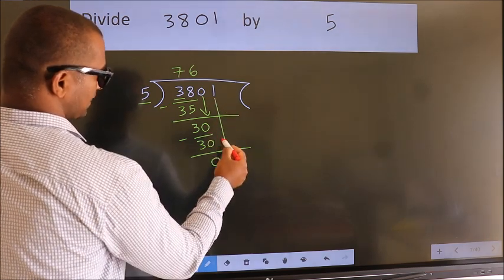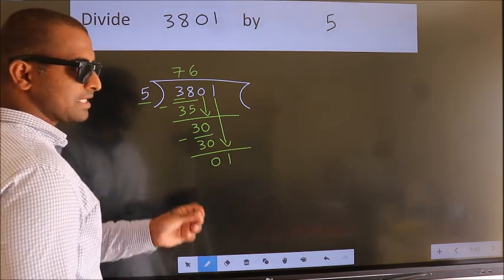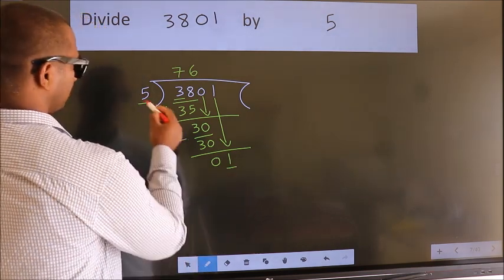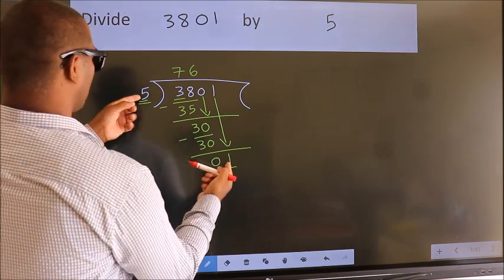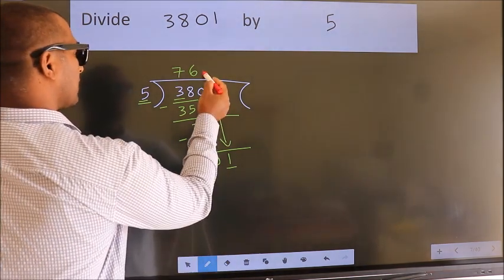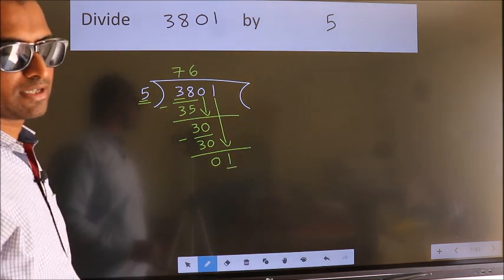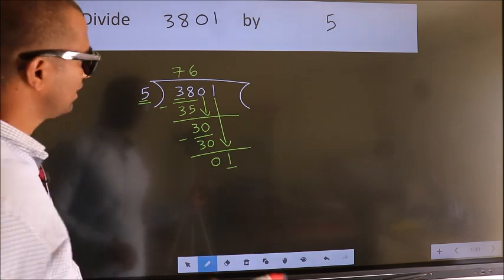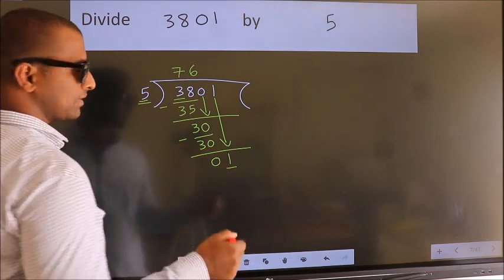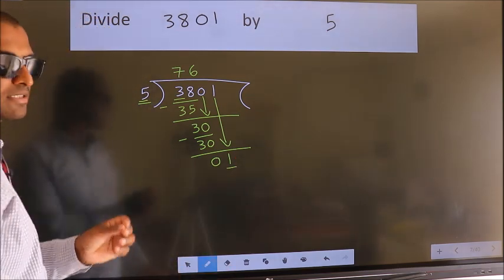After this, bring down the beside number. So 1 down. After this step, the mistake happens. And the mistake is this. Here we have 1. Here 5. 1 smaller than 5. So what many do is, they directly put dot take 0. Which is wrong. Why is it wrong? Because just now you brought this number down. And in the same step, you want to put dot take 0. Which is wrong.